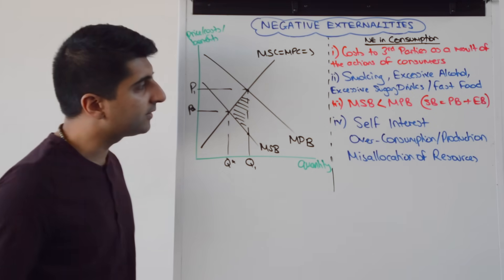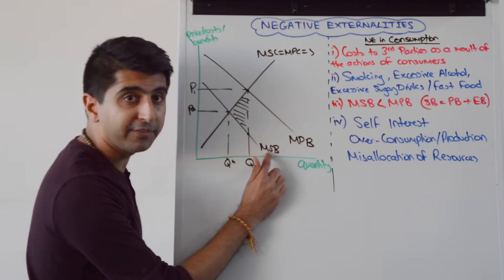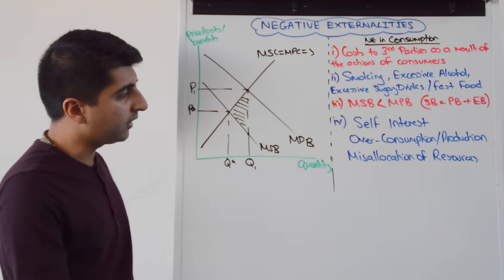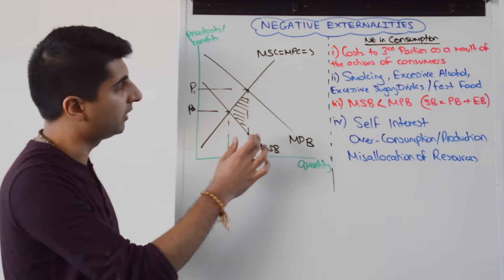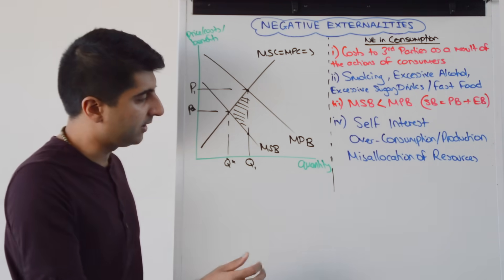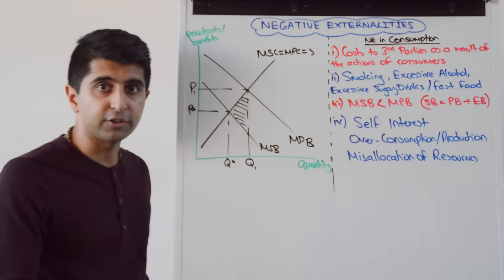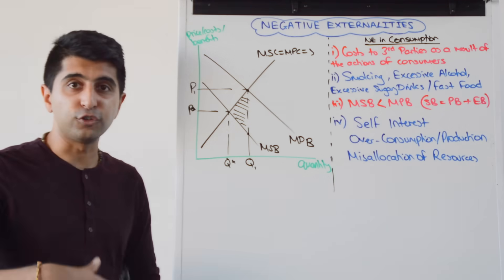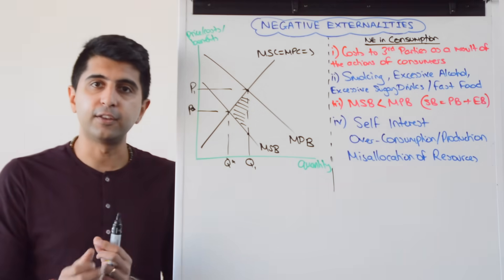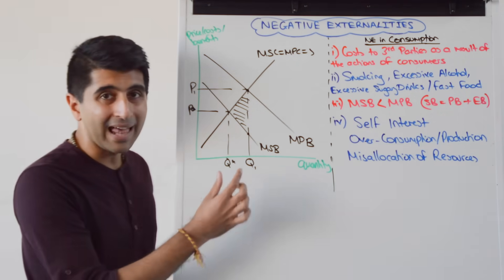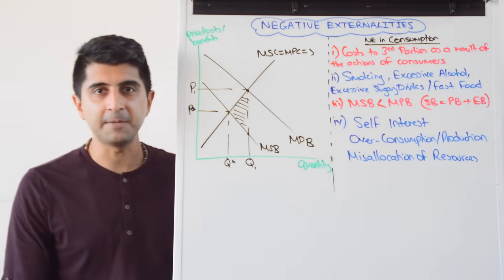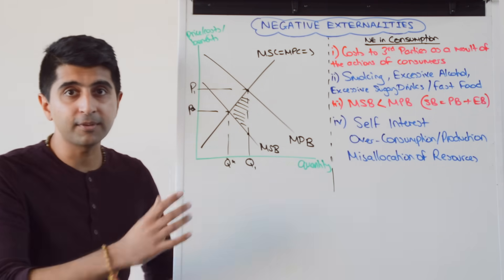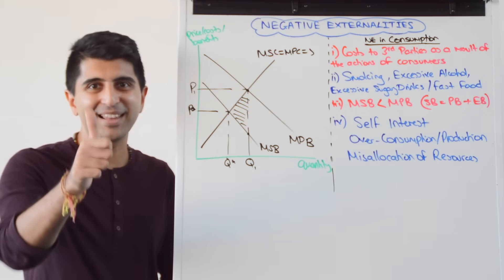In terms of your analysis, you would say consumers are ignoring the full social benefit of their actions — they are only considering their private benefits due to self-interest. The end result is that the market is allocating resources at Q1 and P1, where MPC cuts MPB. That leads to an over-consumption and then an over-production of these goods and services. As a result, there is a misallocation of resources — too many resources are being allocated to this market than are socially desirable — resulting in allocative inefficiency and a welfare loss to society. So that covers negative externalities perfectly, the detailed analysis, examples, and diagrams. Let's do the same for positive externalities next. Thanks for watching, guys.